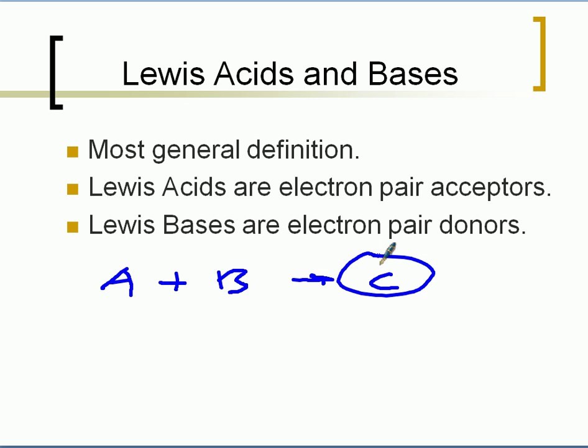The definition of Lewis acids and bases not only defines all the previous ones but also takes into account synthesis reactions. In the general definition, Lewis acids are electron pair acceptors, and Lewis bases are electron pair donors. We're really looking at electrons around atoms versus protons being transferred in the Bronsted and Lowry definition.